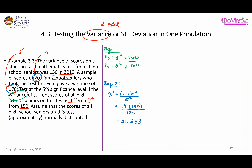Step three is finding the critical values. We start by sketching the chi-square distribution and the critical regions. Based on the alternative statement — sigma squared not equal to 150 — this is a two-sided test, meaning the variance can be either lower than 150 or greater than 150. Therefore, we have two critical regions: one on the left side and one on the right side.